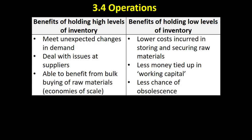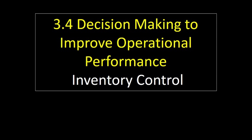Finally, with lower stock levels there's less chance of stock becoming obsolete. Obsolescence occurs when stock goes out of date — this happens with food and in technology when last year's models can't be shifted. The decision to hold high versus low levels of stock depends on the nature of the product, whether demand is fluctuating and hard to predict, and whether you're dealing with unreliable suppliers.